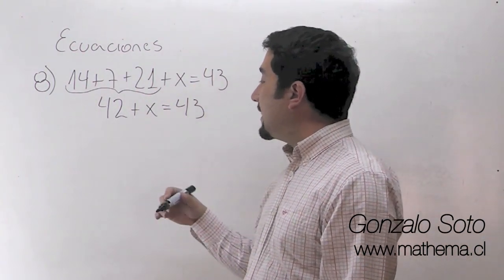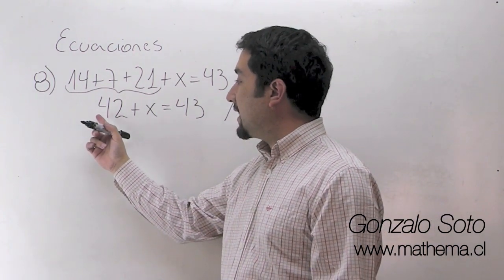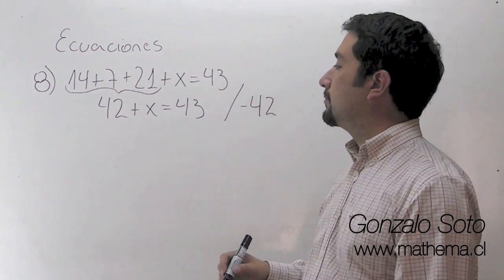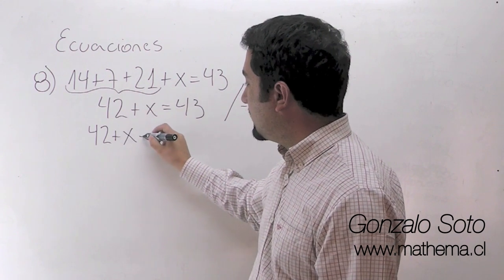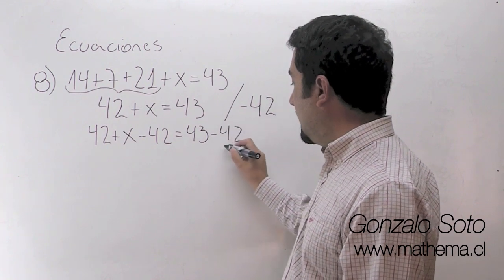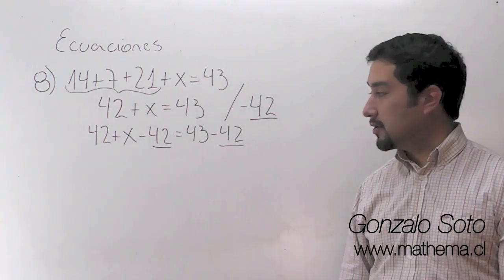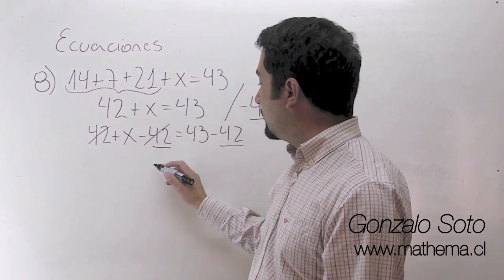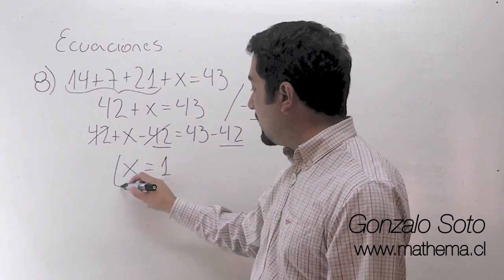Ahora la idea es dejar la x solita y para eso nosotros vamos a agregar el inverso aditivo o el inverso de signo del 42, o sea, menos 42. Entonces tenemos 42 más x menos 42 es igual a 43 menos 42. Estoy agregando ese número a ambos lados de la ecuación. Números iguales con signos distintos, esto es 0. Me queda x es igual a 43 menos 42, que es 1. Entonces x vale 1.